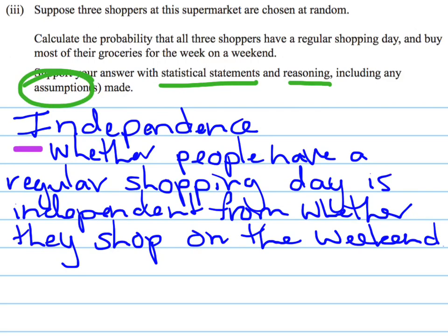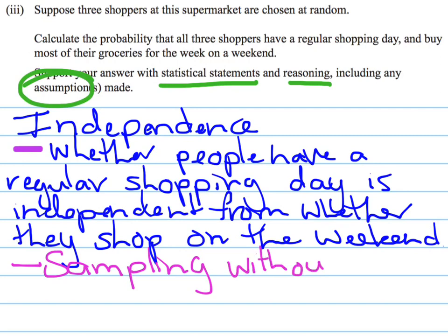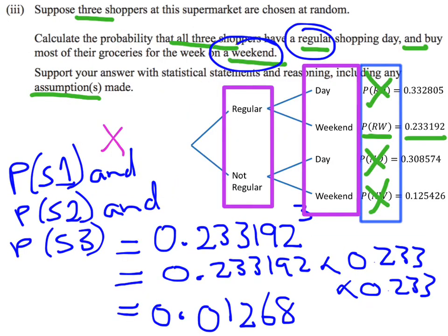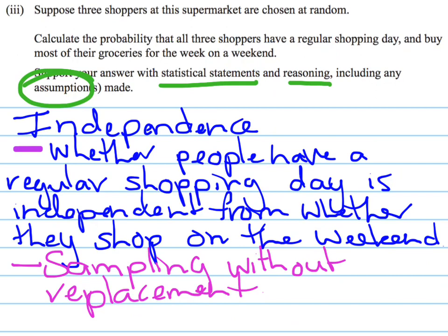Another assumption we can discuss is the sampling component. In this case we have been sampling without replacement. Going back to the original question 1A, it mentioned there were 559 shoppers. With that number of shoppers, we can reason about the sample size — is it large enough to give us good representative data? There's a whole range of reasoning we could go into there.